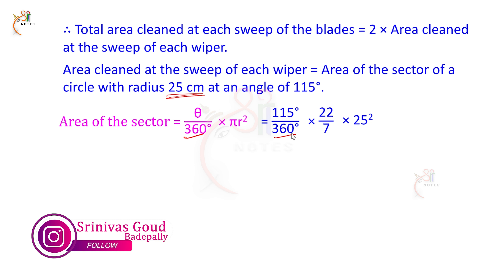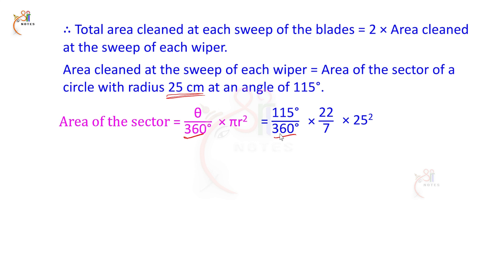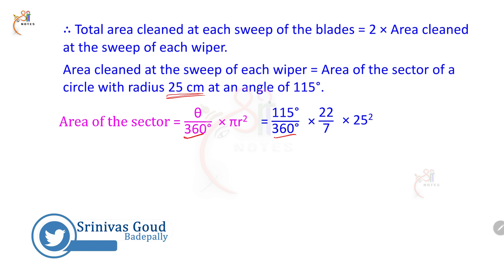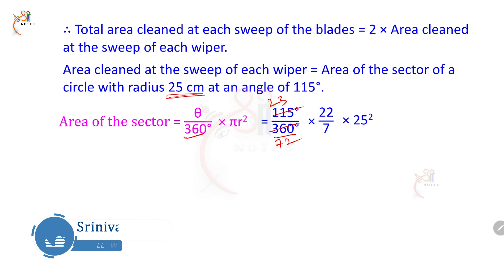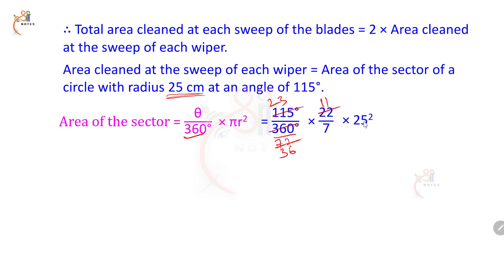Substituting values: 115/360 × 22/7 × 25². Simplifying 115 and 360 gives 23/72. And 22/72 simplifies further. We get 23/36 × 11/7 × 625, since 25 squared is 625. So write down: 23/36 × 11/7 × 625. This is the area of the sector for one blade sweep.